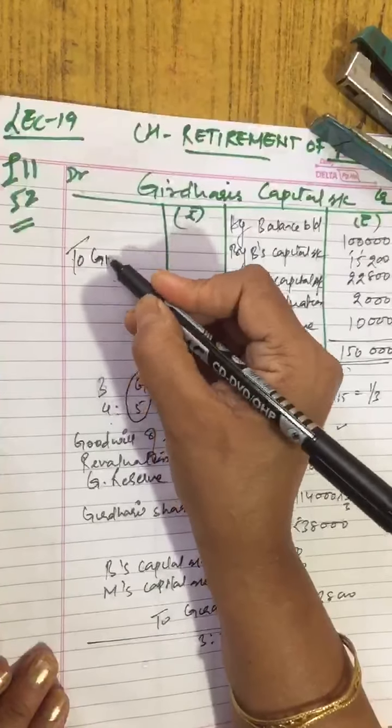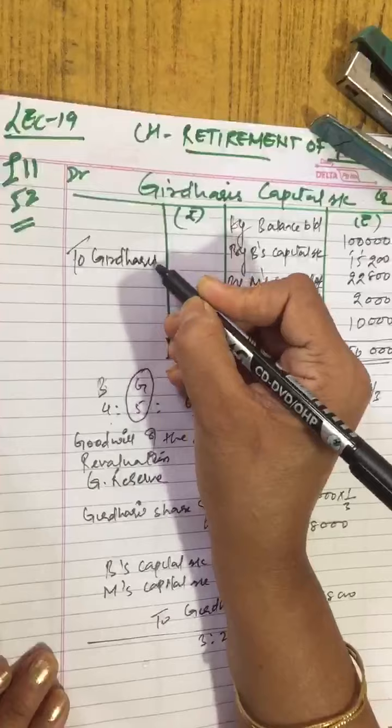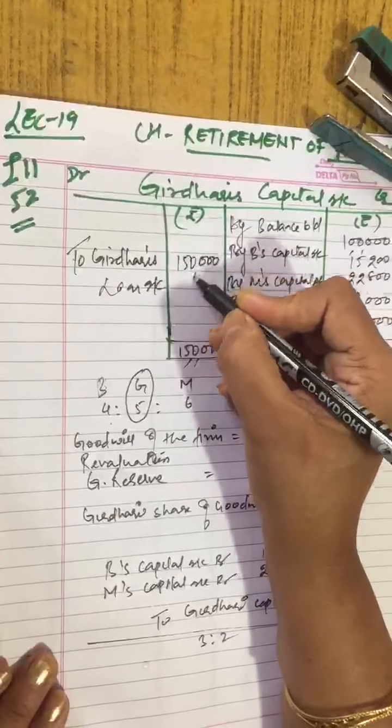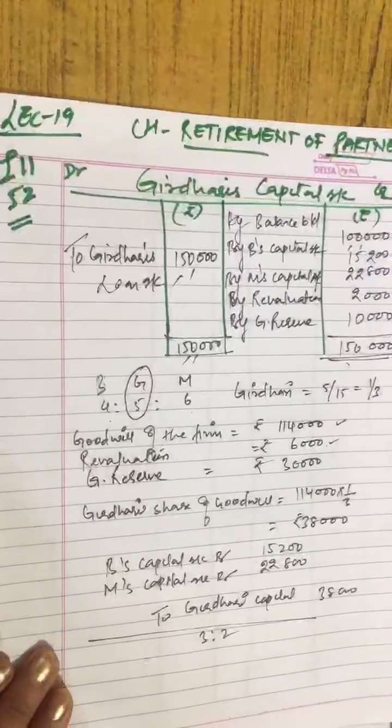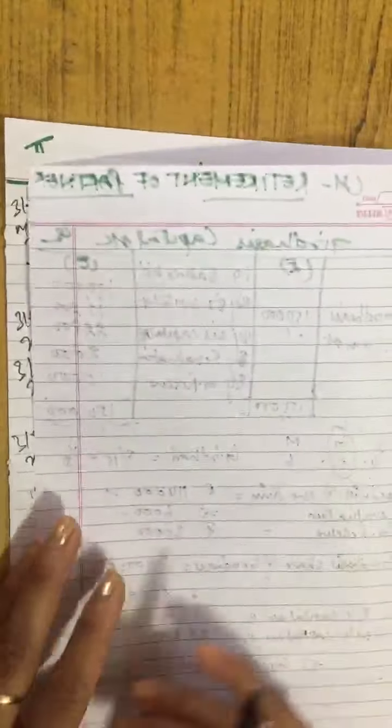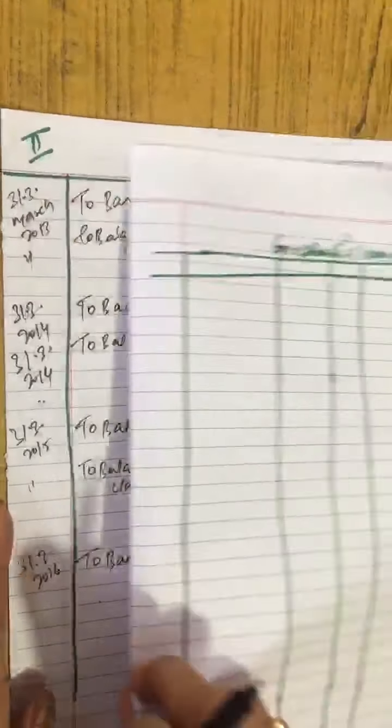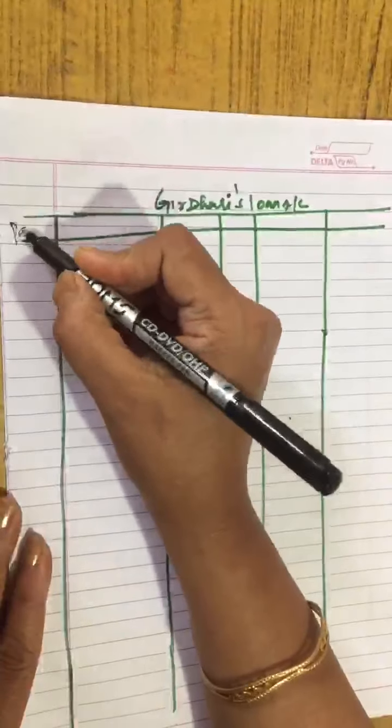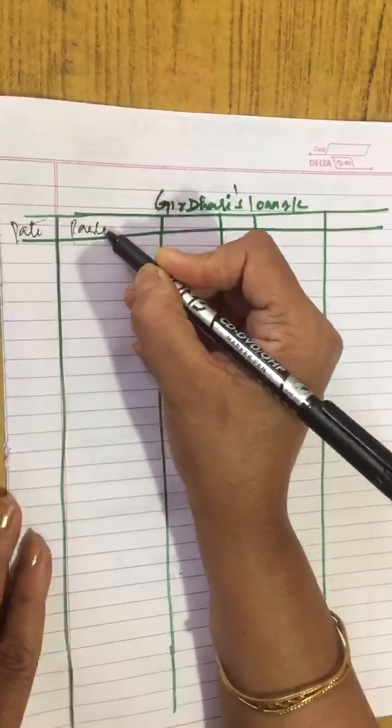Now this 1,50,000 they have said we will not pay right now. We will transfer to his loan account. To Girdhari's loan account you transfer 1,50,000. Now our question is half done here. 1,50,000 we have found out how much we have to pay him. Now this 1,50,000 we will transfer to his loan account.